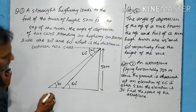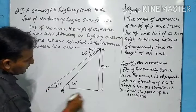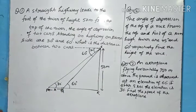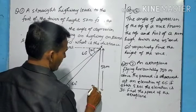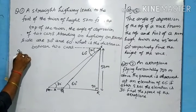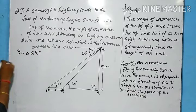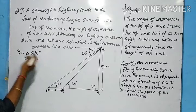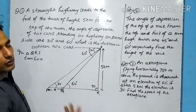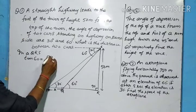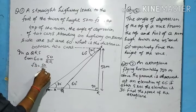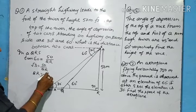We have to find the distance between the two cars, which is PQ. Let us label the points: we need to find the value of x. We have two triangles — triangle PRS and triangle QRS. In triangle QRS, tan 60° equals perpendicular upon base, which is 50 upon QR. tan 60° is √3, so √3 = 50/QR, giving QR = 50/√3.